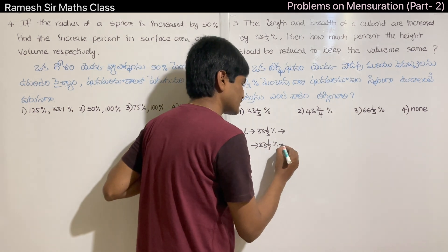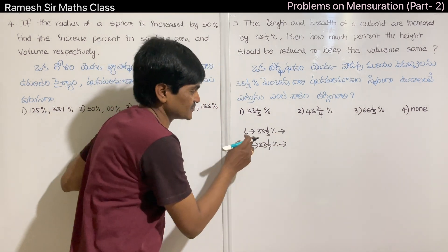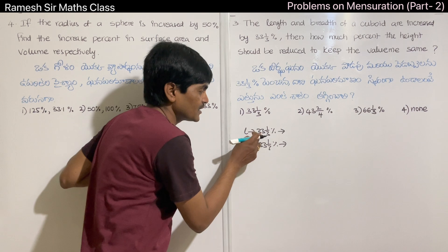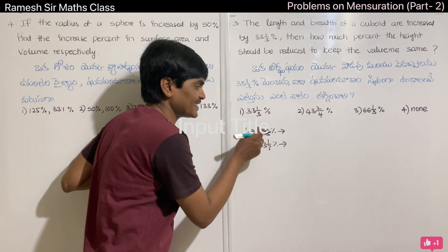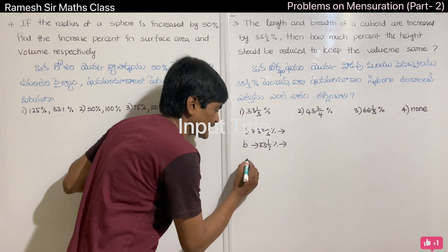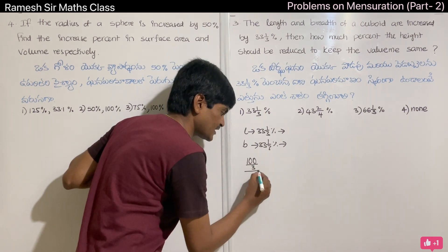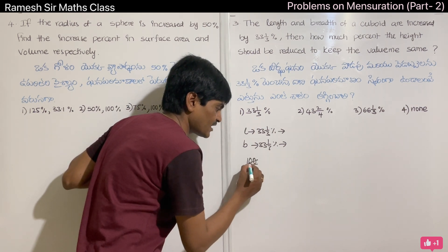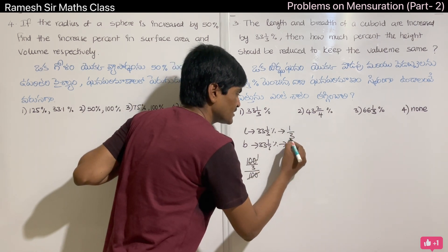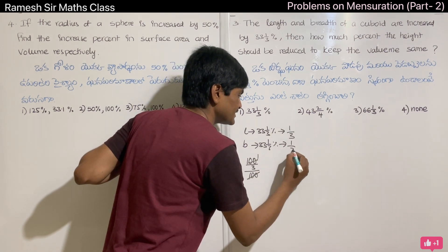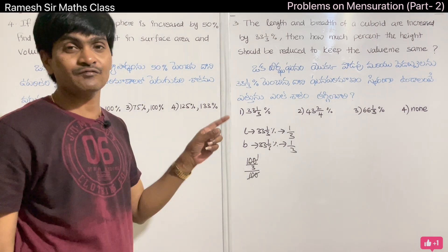We convert 33⅓ to an improper fraction. The mixed fraction becomes: 33×3 = 99, plus 1 is 100, so it is 100/3. We divide: 100 is 1 times — meaning the fraction is equal to 1/3. So 33⅓% corresponds to the fraction 1/3.